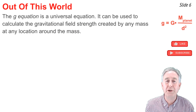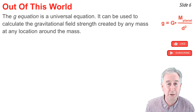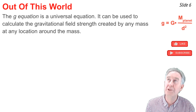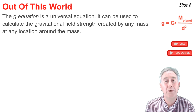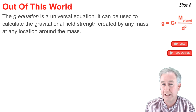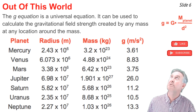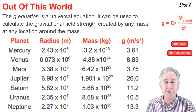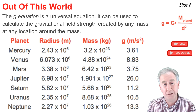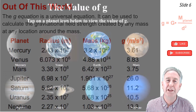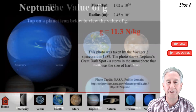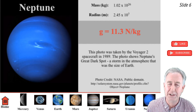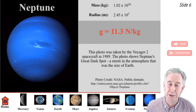Because the g equation is universal, it can be used to calculate the gravitational field strength created by any mass at any location. For instance, we can calculate the value of g on the surface of the planets of our solar system — all we need is the mass and radius of each planet. Substituting those values gives the g value for each planet, showing how location dependent g truly is. A link to an interactive titled 'The Value of G on Other Planets' is available in the description.